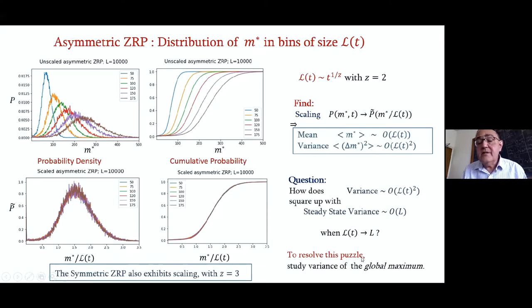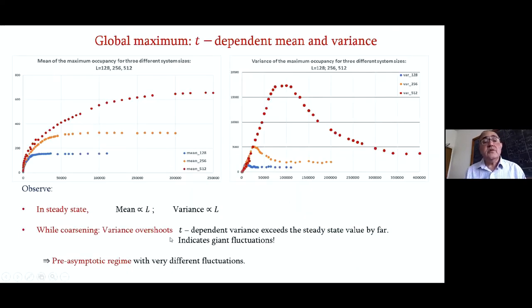After L(t) will approach L, so how do these reconcile? To study this, we actually looked at the variance of the global maximum. And this is what we found. On the left is the mean. Here is the variance. The mean grows monotonically and approaches the value it should, namely the condensate mass. But look at the variance. The final value is right here. But on the way, it doesn't go monotonically. It has a huge overshoot. And then falls and goes to the final value.